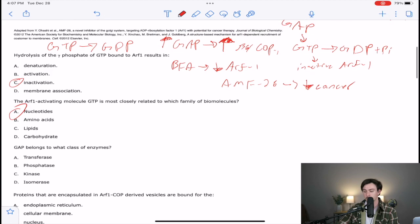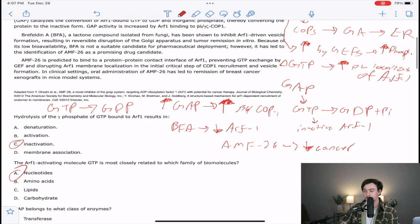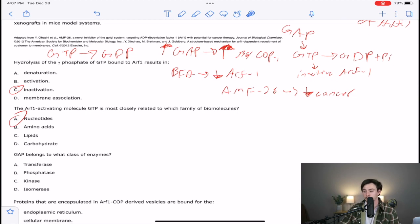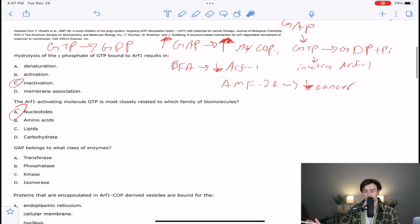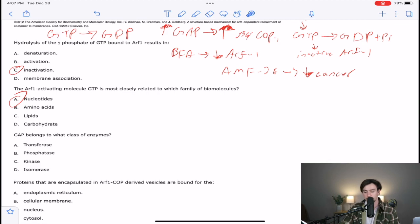This third one says GAP belongs to what class of enzymes? So first, we need to figure out what GAP ends up doing. So we go back to our handy-dandy flowchart. Here, we see that GAP takes a GTP and it cleaves it. It cleaves a phosphate off. So what type of molecule is going to cut a phosphate off? We see transferase is answer choice A. Transferase involves the molecule that you're cutting off onto an additional molecule. So we don't see that, because we have this free-floating phosphate.